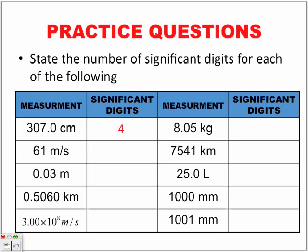Next example, 61 meters per second. Real simple, two significant digits, the six and the one.